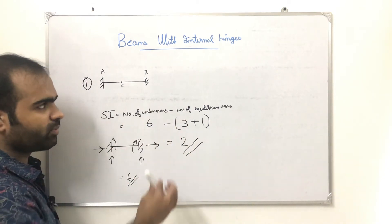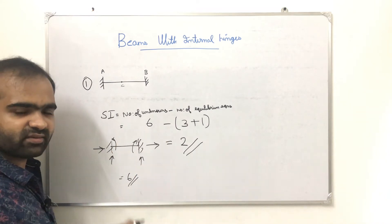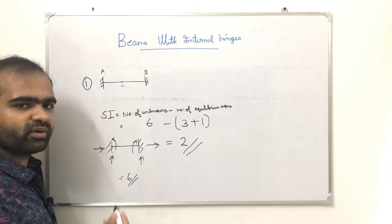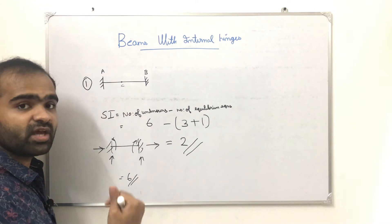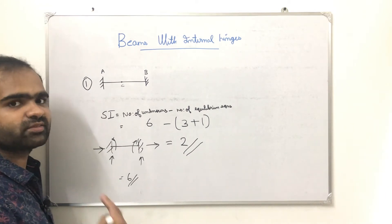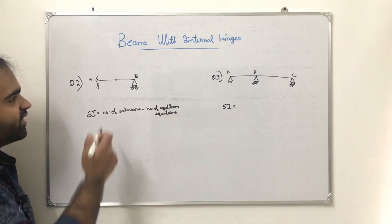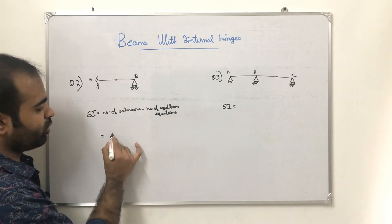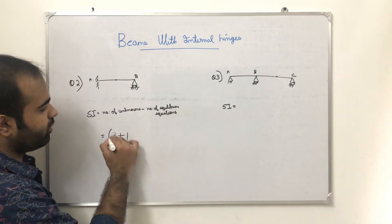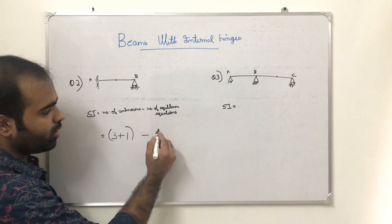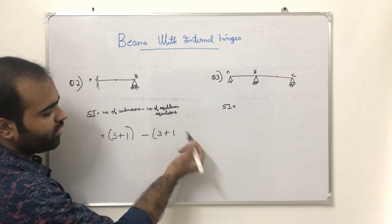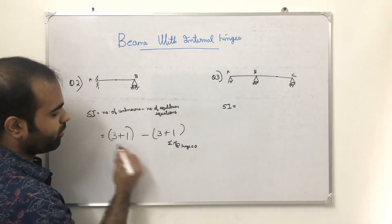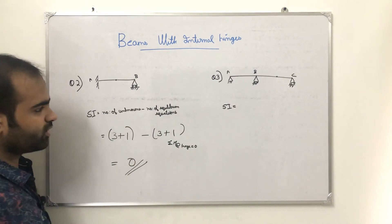In the usual condition without a hinge, it would be 6 minus 3. In the second case, with a fixed support plus a roller support plus a hinge, we have another equation: sigma M2 = 0. In that case, the static indeterminacy is 0.